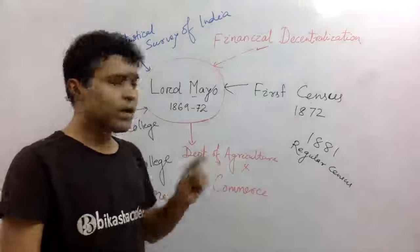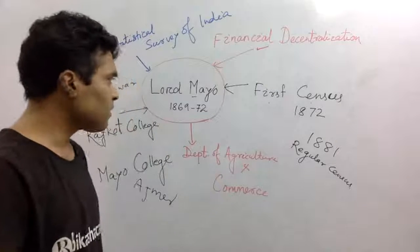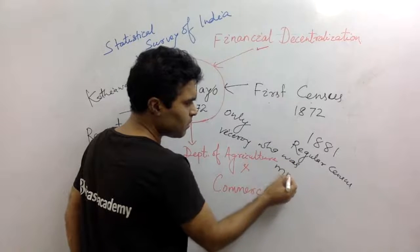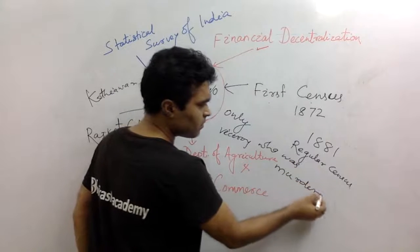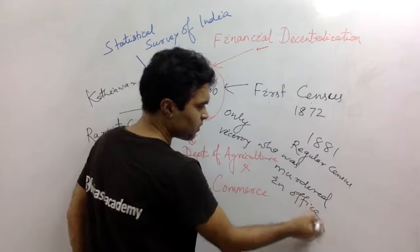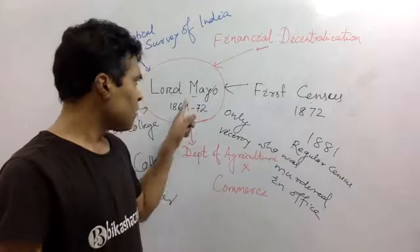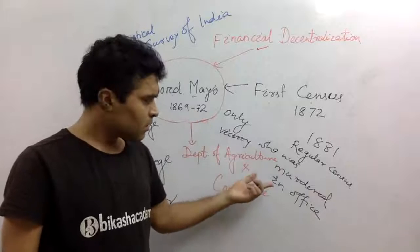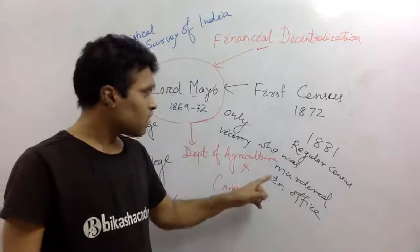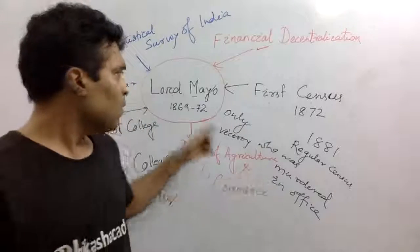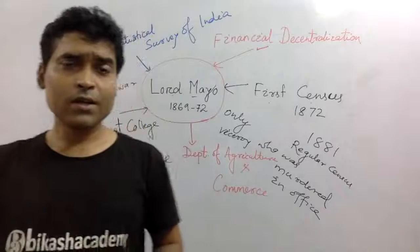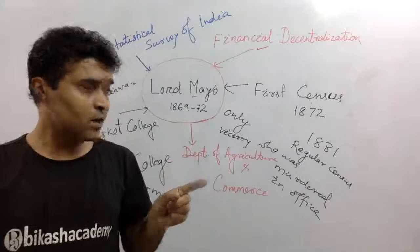And finally, here is the most important point: Lord Mayo was the only Viceroy who was murdered in office. In Andaman, Mayo was murdered by an Afridi. You should remember this — the question may be asked: which of the following Viceroys, or the only Viceroy, who was murdered in office?